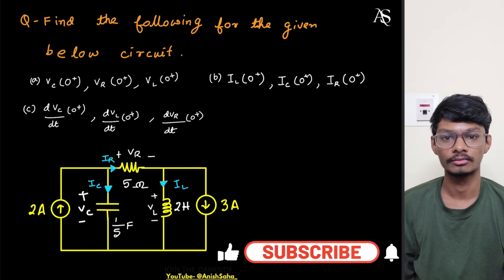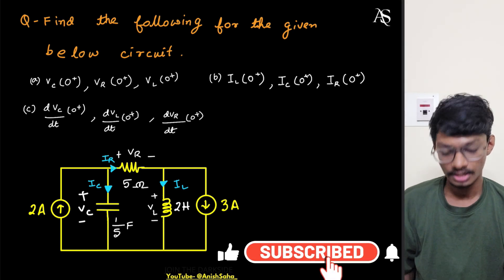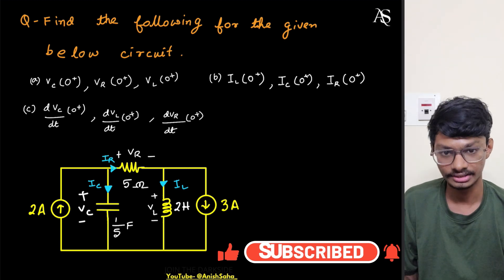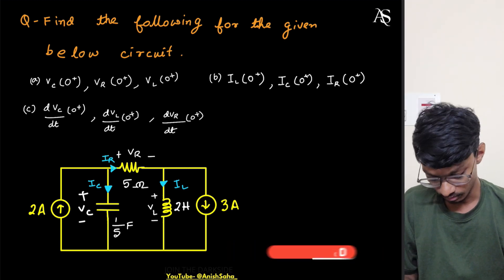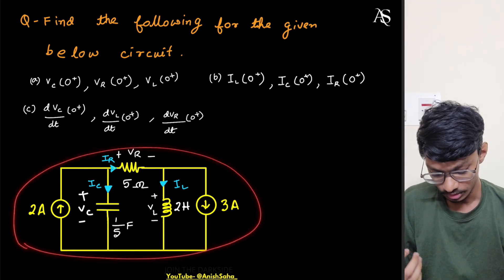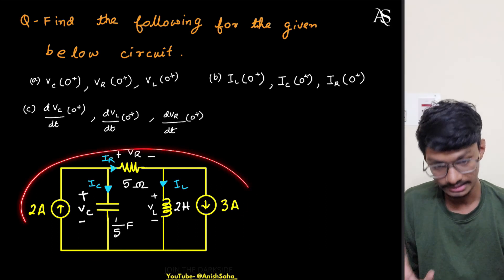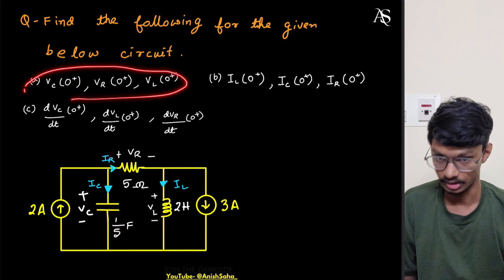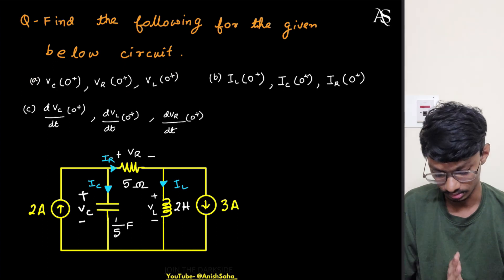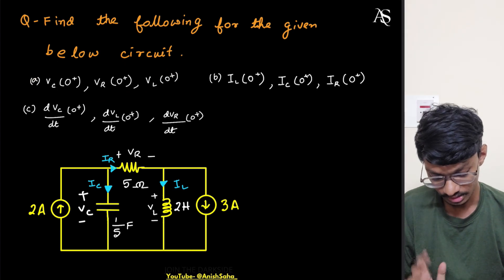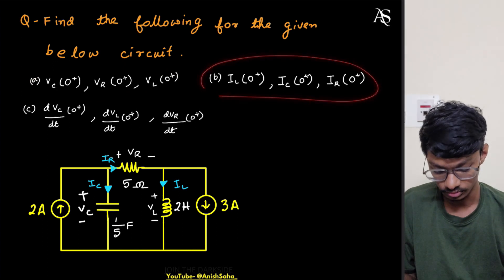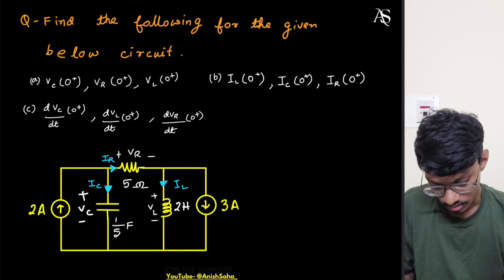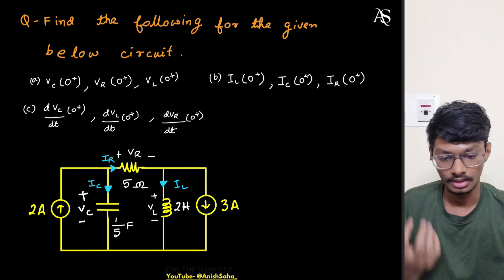Hello everyone, I'm Anish and welcome to my YouTube channel. Today we'll solve a very interesting question on finding the initial conditions for a given RLC circuit. We have to find the initial voltages across the inductor, capacitor, and resistor, the initial currents, and also the rate of change of voltages.